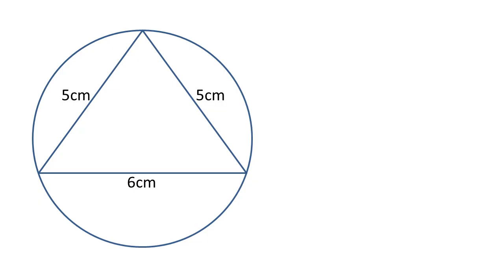We're going to start to solve this problem by adding the centre of the circle and drawing a radius out to the bottom left corner of the triangle. As this is a radius, I'm going to label it R.